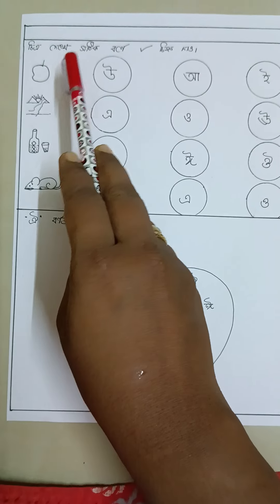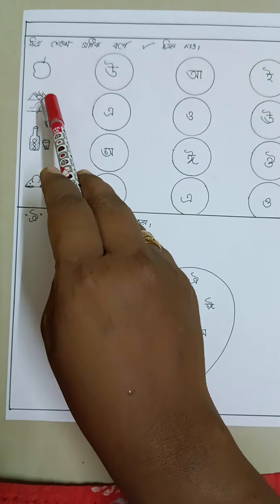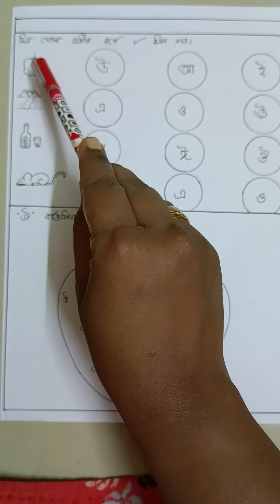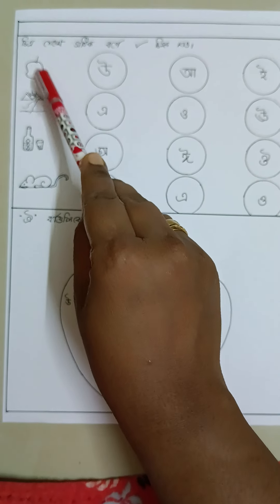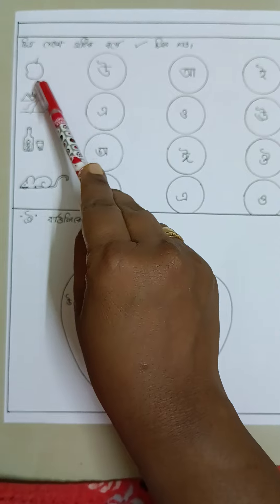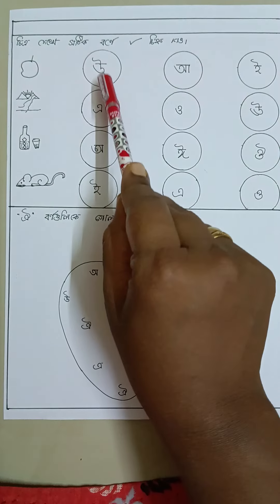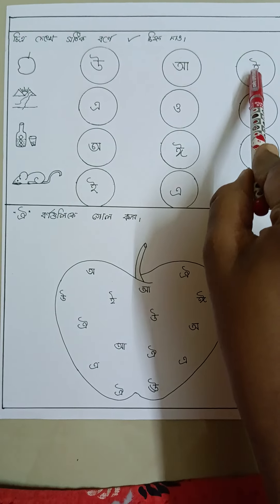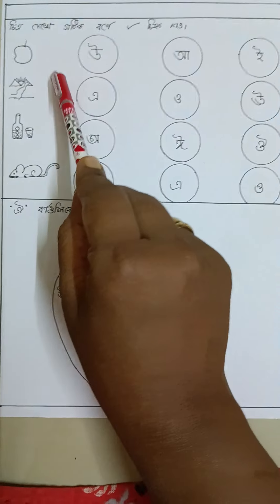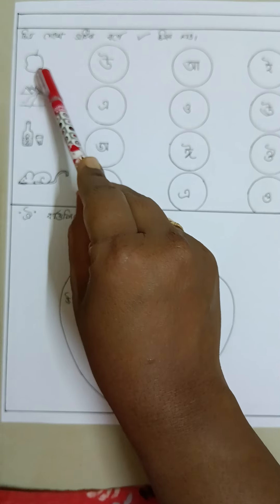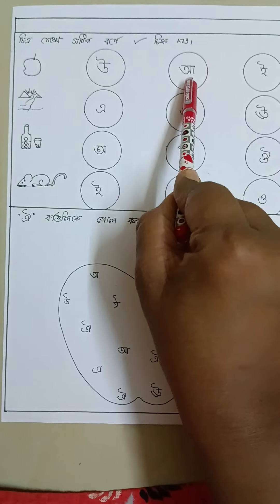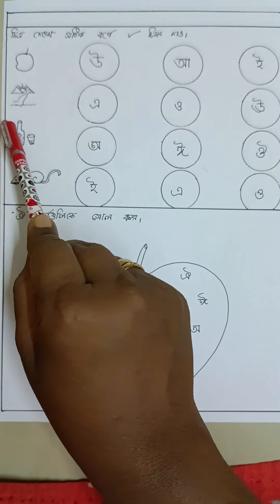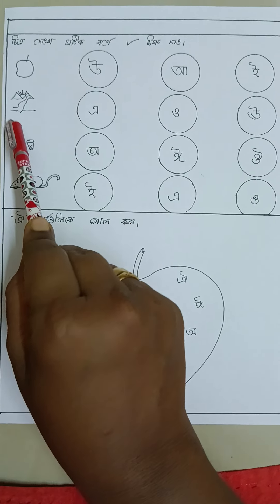It means: see the picture and tick the beginning letter of the picture. Here I have drawn one mango, and the child needs to identify which of these three letters is the starting letter of this word. Obviously the answer is the correct letter, so the child will put a tick there.